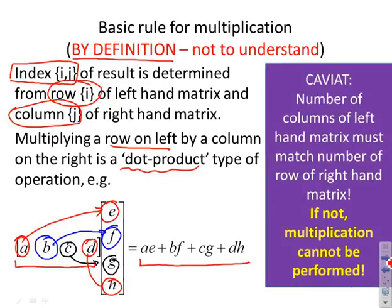There is a caveat: in order for this definition to work, the number of columns of the left-hand matrix must match the number of rows of the right-hand matrix, because otherwise we can't write this formula down. If the number of columns of the left does not match the number of rows of the right, then multiplication cannot be performed and is not defined.